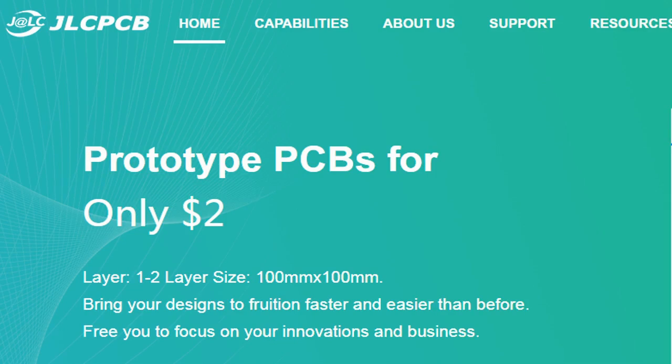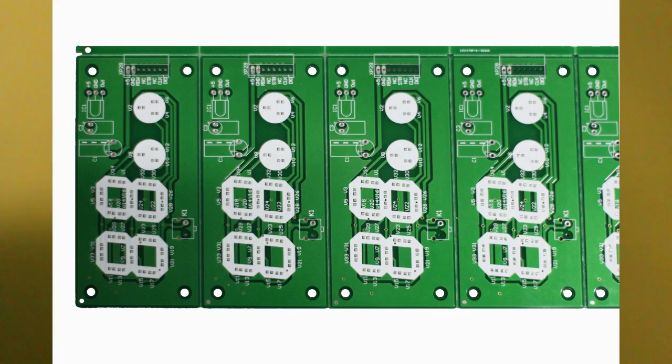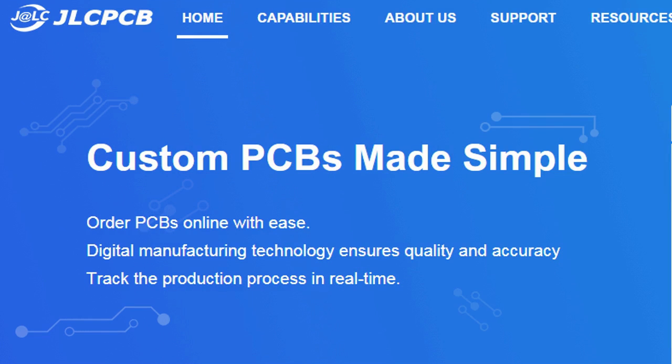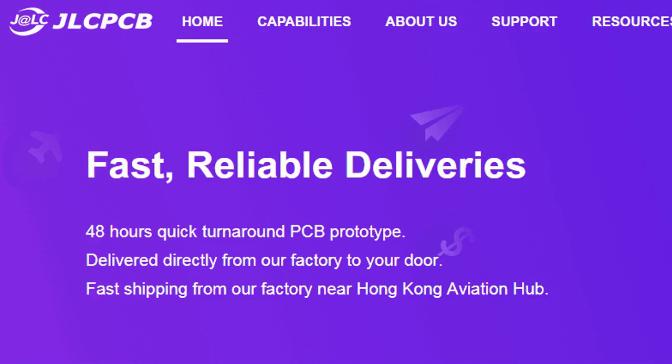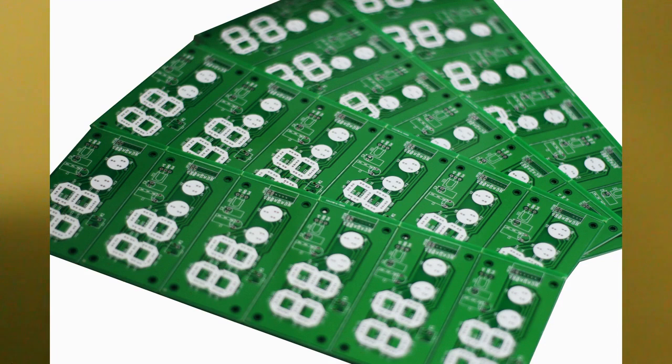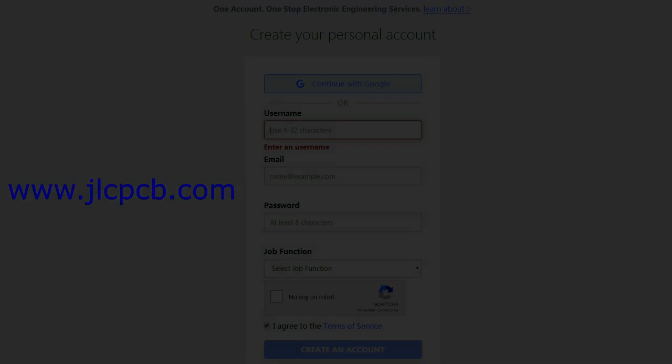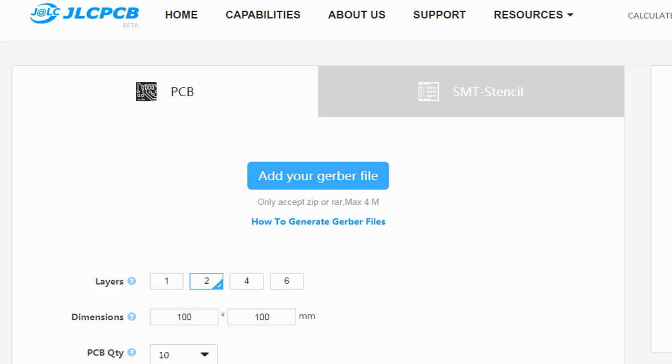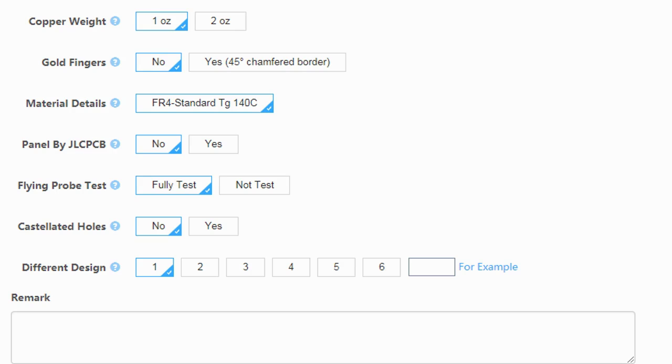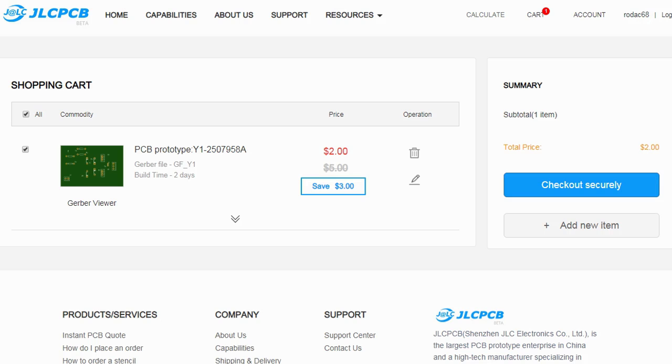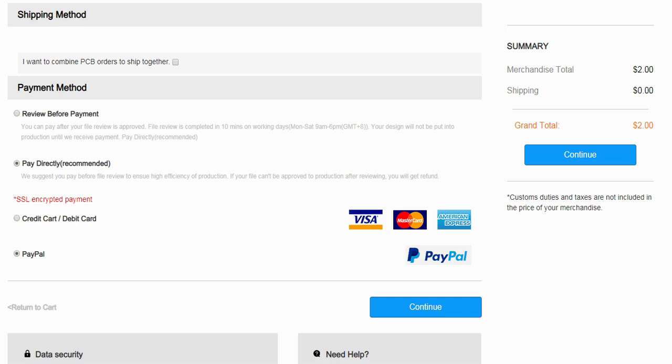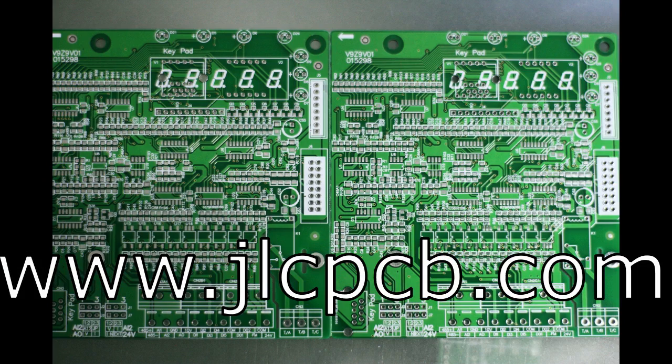This video is sponsored by JLCPCB. JLCPCB is a company that makes excellent quality PCBs at an unbeatable price. You can order boards online in minutes. After registration, upload your Gerber files, select the PCB properties, select the payment method, and place your order. Best price and quality for all your PCB needs.